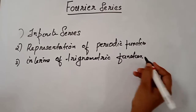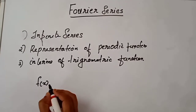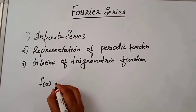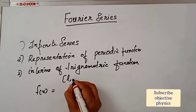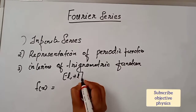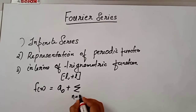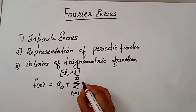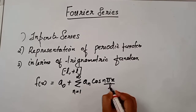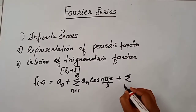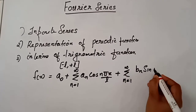Fourier series of a function f(x) in the interval minus l to plus l can be written as: a0 plus sigma n equals 1 to infinity of an cos(n pi x / l) plus sigma n equals 1 to infinity of bn sin(n pi x / l).